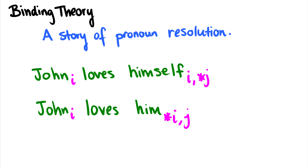Here are some sentences. 'John loves himself,' and I have some indexes here. So John is subscripted I, and then I have I and star-J. This means that 'himself' has to refer to John and cannot refer to someone else. If 'himself' refers to somebody else, then this is an ungrammatical string. So 'John loves himself' has to mean that John loves John.